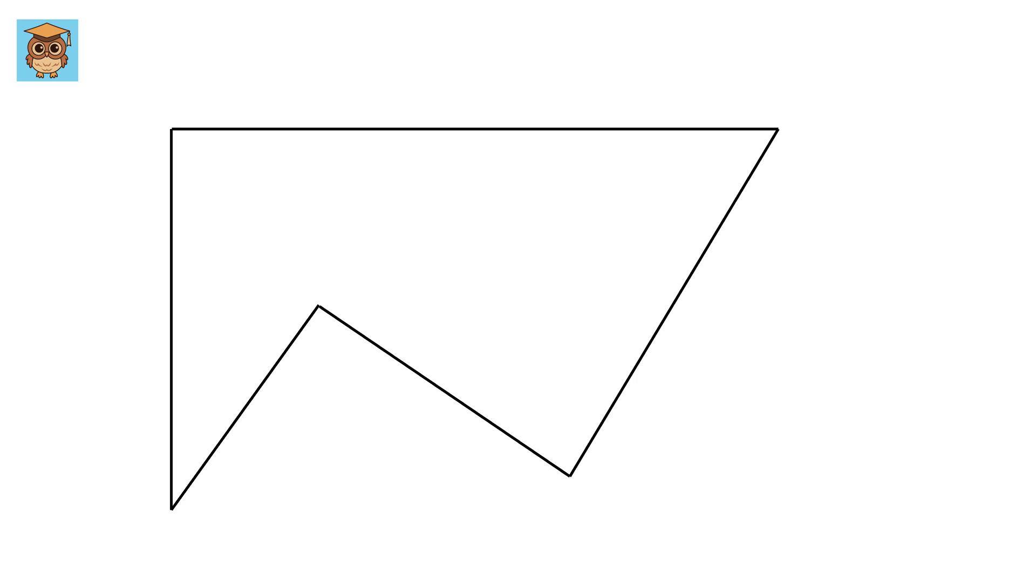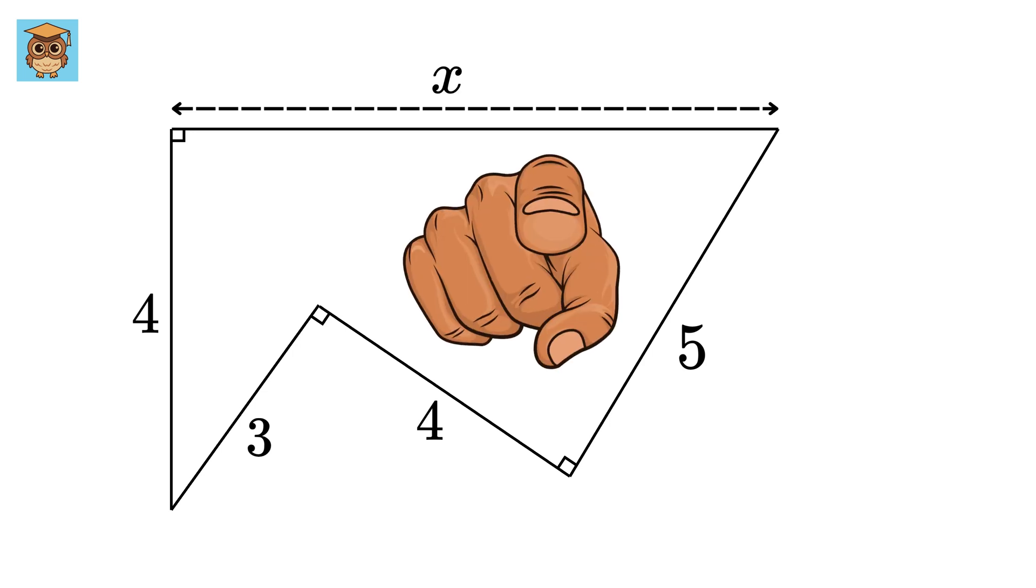This is a pretty interesting problem. We are given the following shape, which has three right angles. Its side lengths are 4, 3, 4, and 5. The question is to find the length of the last side, which is labeled as X. Can you solve this?